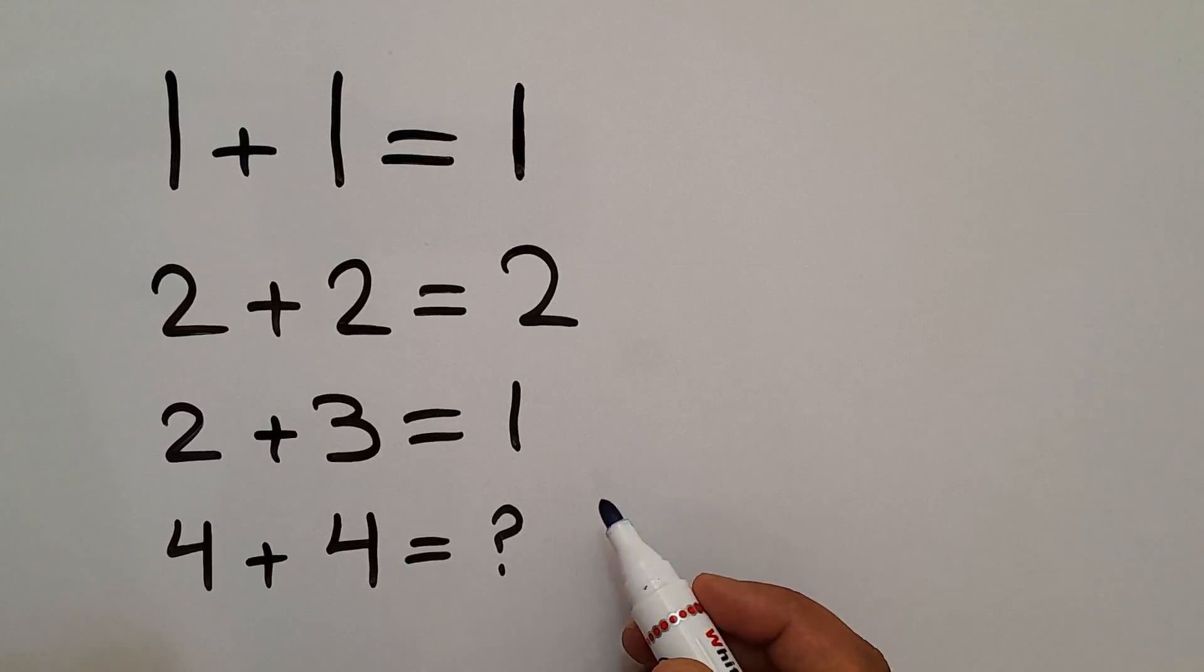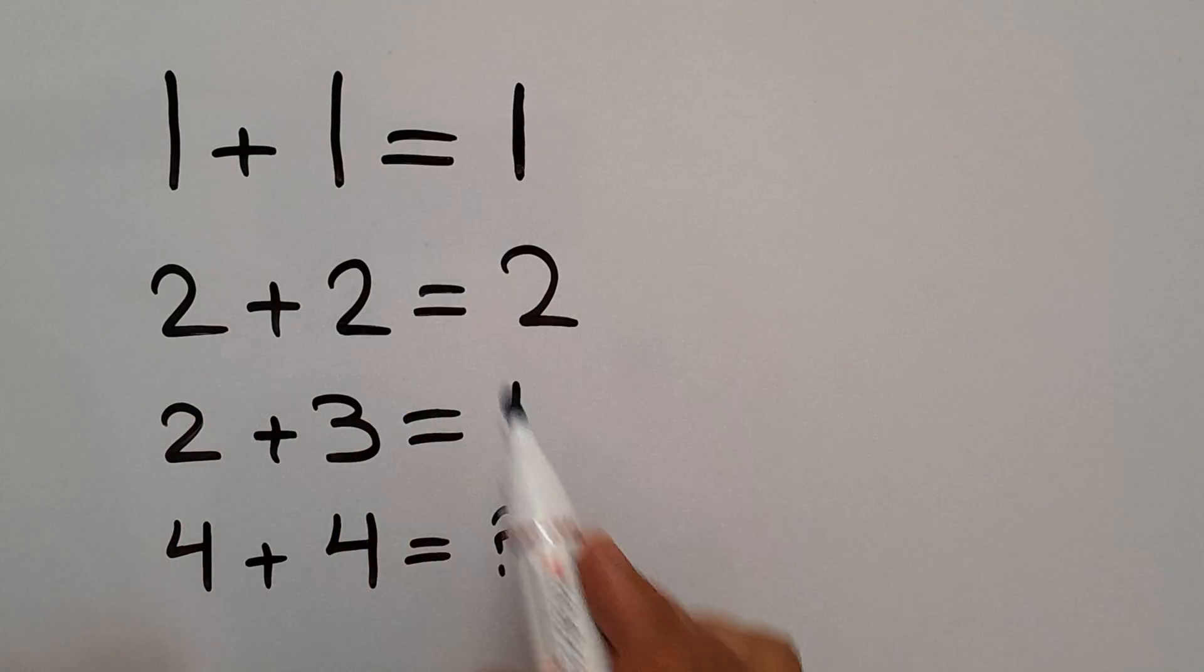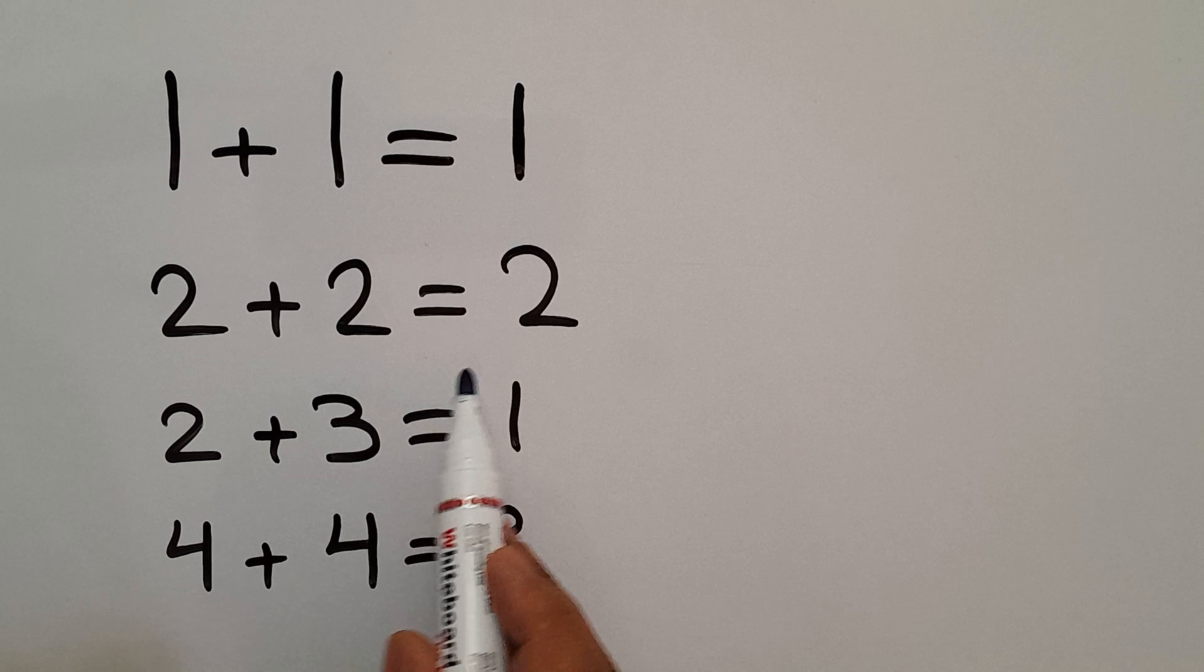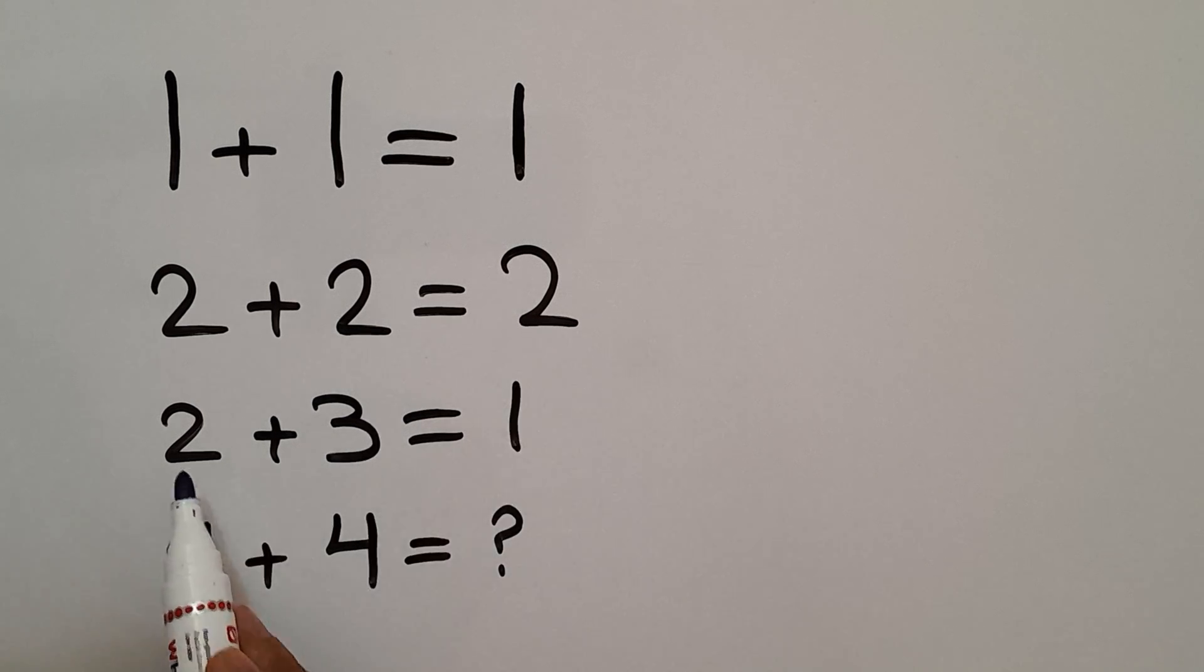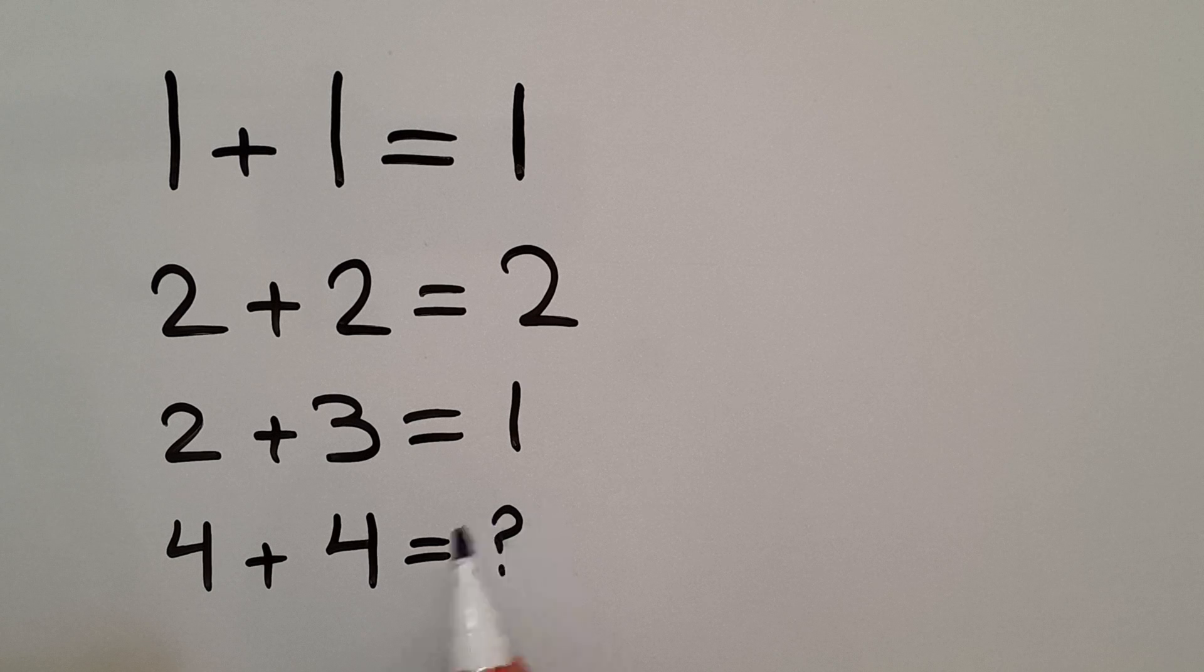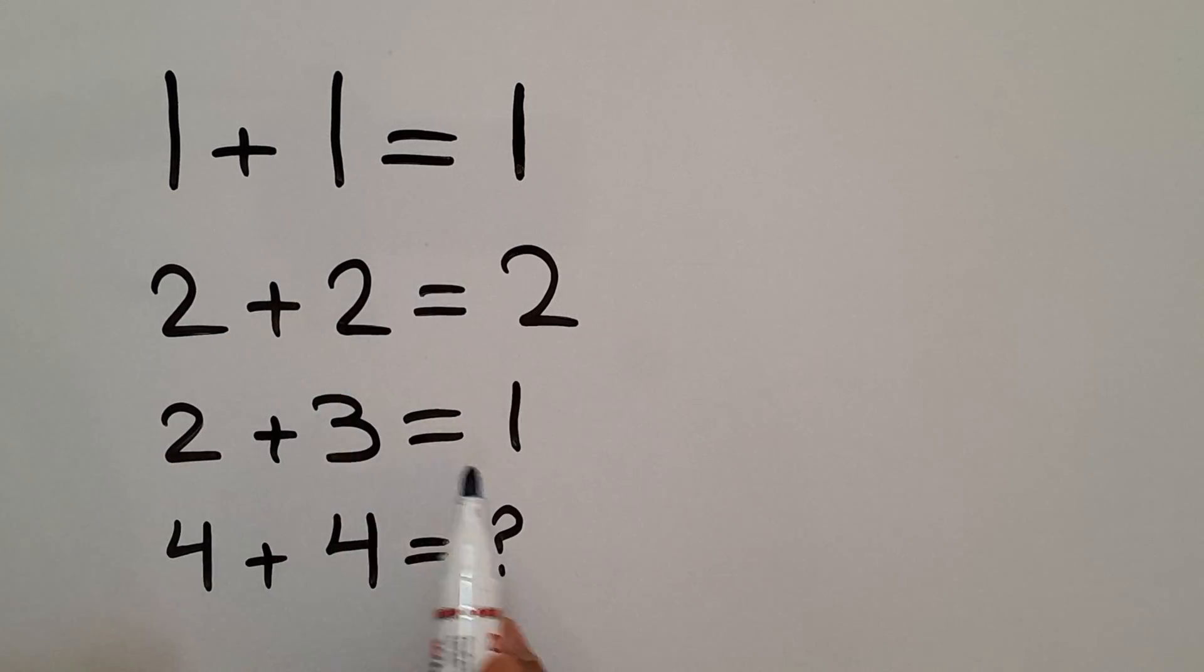Hey guys, welcome to Puzzle Joy. 1 plus 1 equals 1, 2 plus 2 equals 2, 2 plus 3 equals 1, and 4 plus 4 equals question mark. Our goal is to find the pattern that exists here and calculate the missing number.